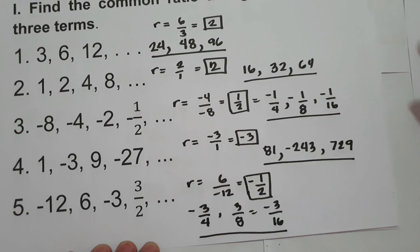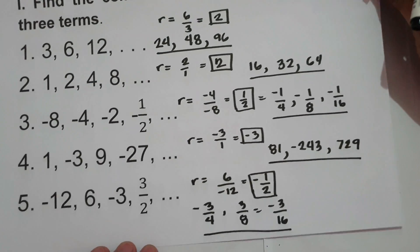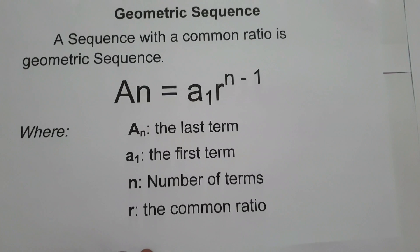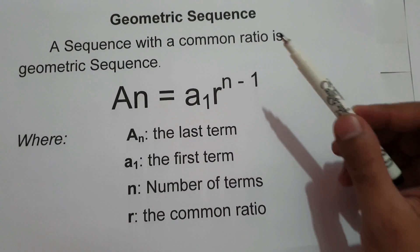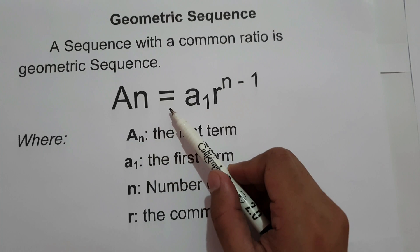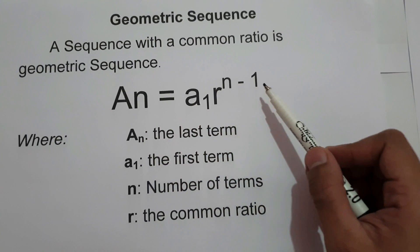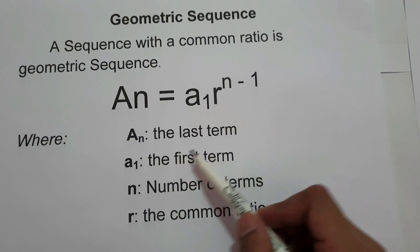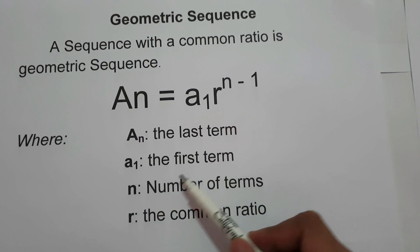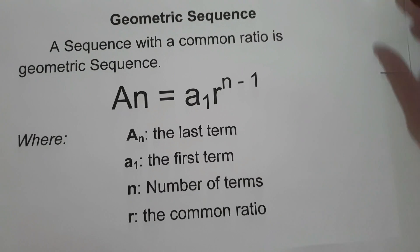Since we already know how to find the common ratio and how to find the next 3 terms, let us proceed to the formula of geometric sequence. The general formula for geometric sequence is: a sub n equals a sub 1 times r raised to n minus 1, where a sub n is the last term, a sub 1 is the first term, n is the number of terms, and r is the common ratio.